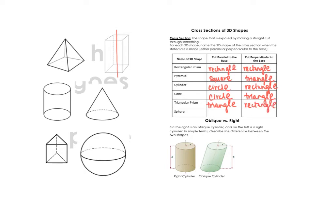Pausing to note some trends: any time we cut parallel to the base, the cross-section is the same shape as the base. When we cut perpendicular, the only two shapes formed are triangles and rectangles. For prisms and cylinders (two bases), the perpendicular cross-section is a rectangle. For cones and pyramids (one base), it's a triangle. The sphere is special — there is no base, so no matter how you cut a sphere, the cross-section will always be a circle.